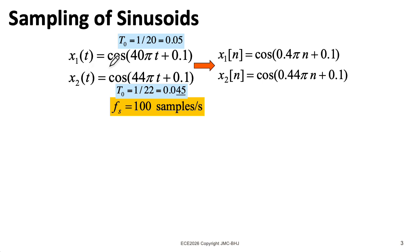Let's consider two signals. The first has a frequency of 20 hertz. The second has a frequency of 22 hertz. And we're going to sample both of them at 100 samples per second. This gives us one sampled sequence with a digital frequency of 0.4π and another with a digital frequency of 0.44π.